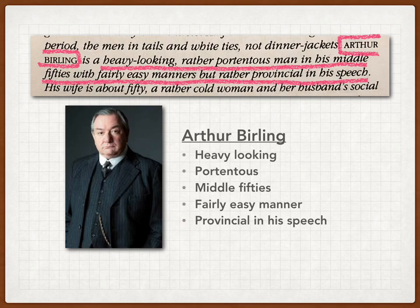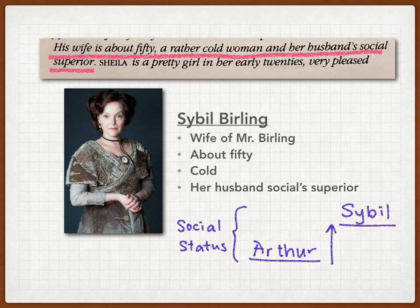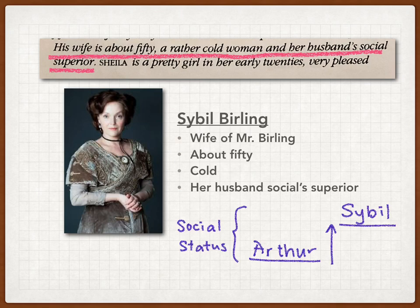Then this is Sybil Birling — Mrs. Birling, the wife of Mr. Birling. She is about 50 years old, but she has a very cold manner. One of the reasons why she is so cold is because she is her husband's social superior, meaning that if you compare the social status between Mr. Birling and Mrs. Birling, she comes from a higher social background.